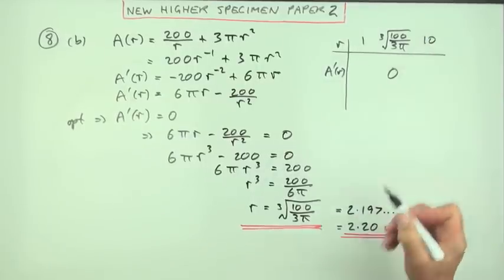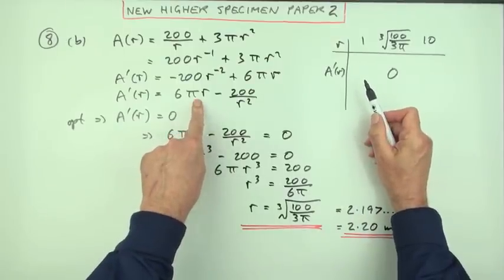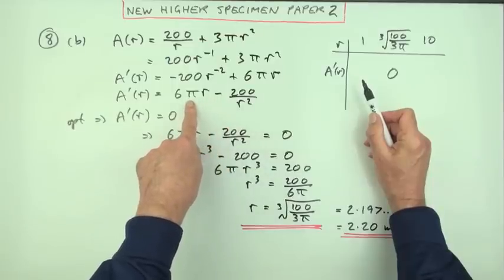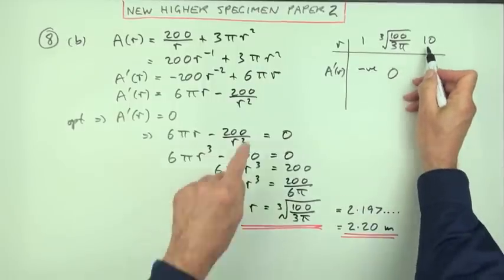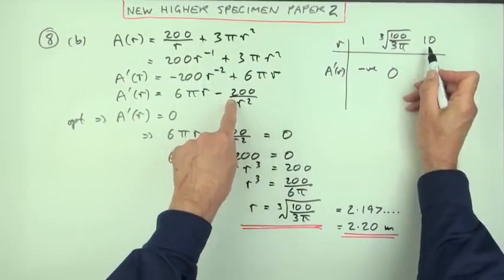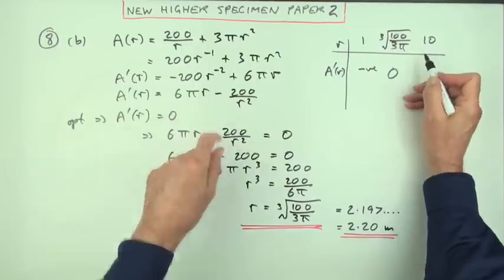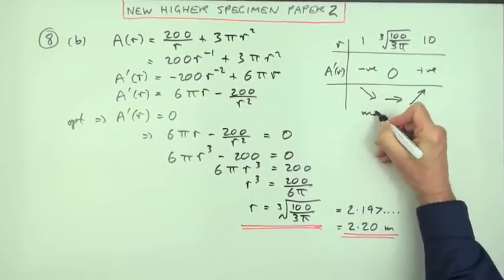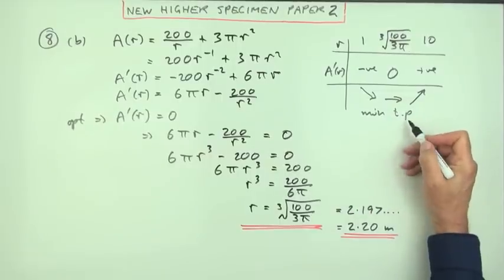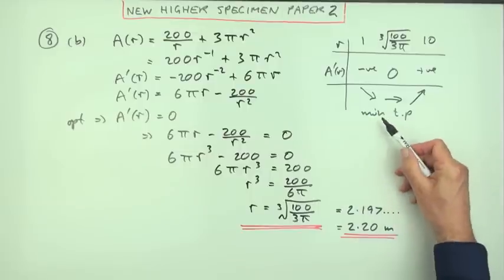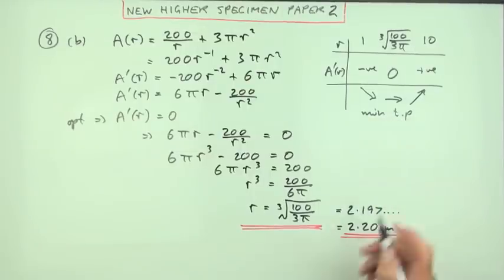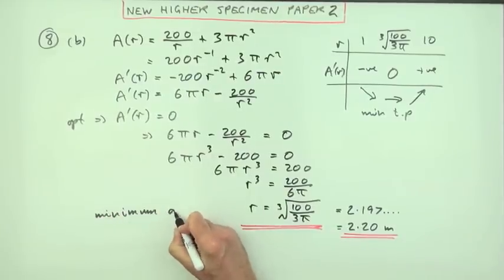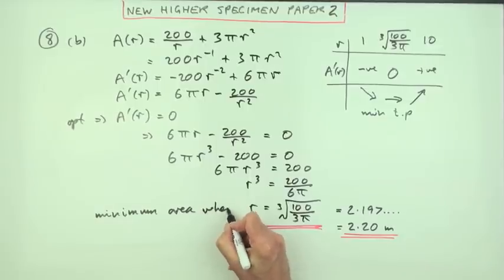I'm looking for numbers to put into this expression. If R is 1, you'll be subtracting 200 from 6 pi, so that's quite definitely negative. When R is 10, you'll only be subtracting 2 from 60 pi, so that'll definitely be positive. Which means the shape looks like this, which means you've got a minimum turning point. Minimum area when R is that, and there's the justification.